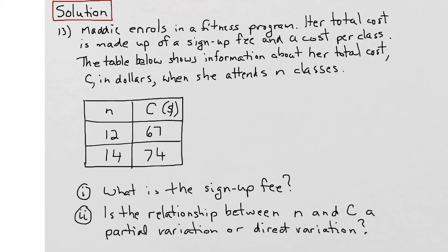Okay, in this question, we're given a table that represents the amount of money that Maddie spent attending this many fitness classes. Given this information, we're asked to figure out what was her sign-up fee, extrapolate back, and then determine if this is a partial variation or a direct variation relationship.